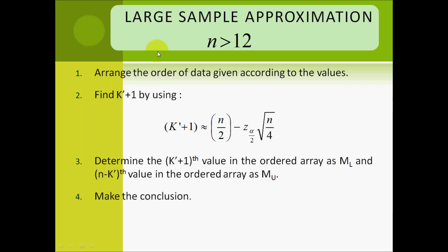For the large sample approximation where n is greater than 12: first, arrange the data in ascending order. Next, find k' plus 1 using the formula: k' plus 1 is approximately equal to n over 2 minus z-alpha-over-2 times the square root of n over 4. Third, determine the k' plus 1 value in the order array as ML and the n minus k value as MU. Finally, make the conclusion.